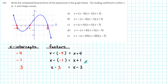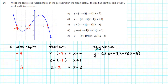To get our polynomial, we multiply the factors and the leading coefficient together. We get y is equal to a times the factor x plus 4 times the factor x plus 1 times the factor x minus 3.